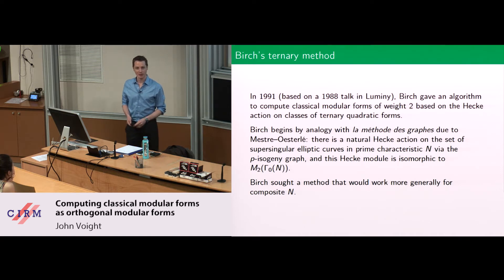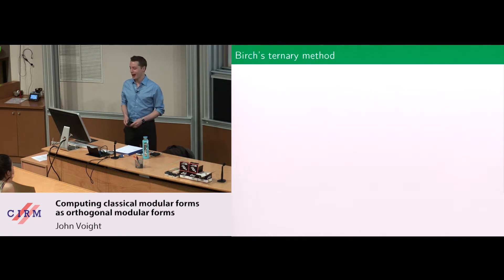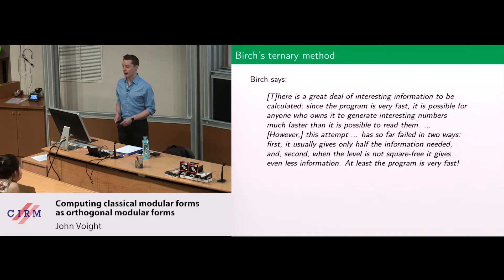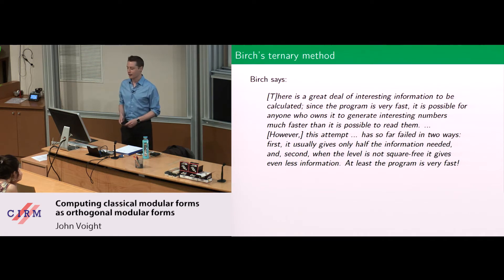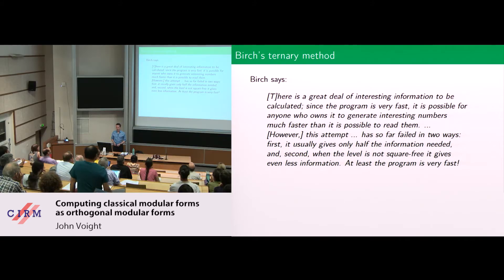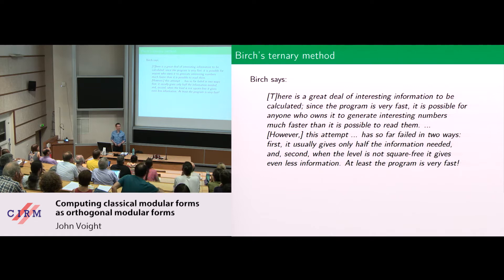Birch wanted to extend this to a method that would work more generally for composite N. So this was about 30 years ago. Here's what Birch has to say about it: 'There's a great deal of interesting information to be calculated. Since the program is very fast, it is possible for anyone who owns it to generate interesting numbers much faster than it's possible to read them. This attempt, however, has so far failed in two ways. First, it usually gives only half the information needed. And second, when the level is not square-free, it gives even less information.'